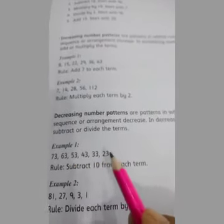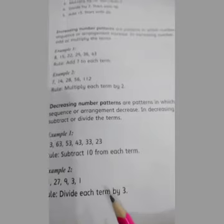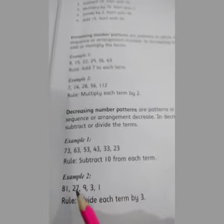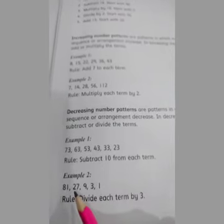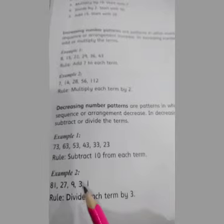We divide each number by 3. So 81 divided by 3 equals 27. 27 divided by 3 equals 9. Because 3 times 9 equals 27. 9 divided by 3 equals 3. And 3 divided by 3 equals 1. This is a decreasing pattern.